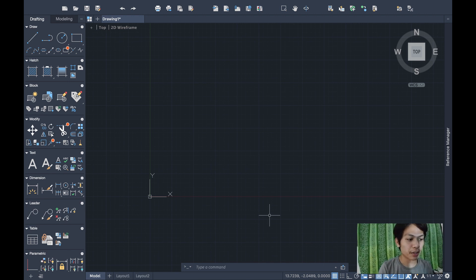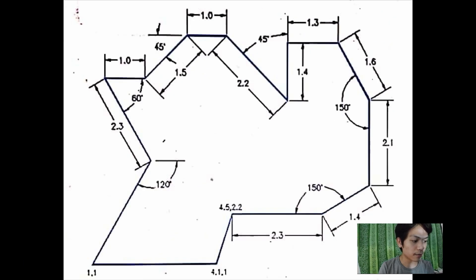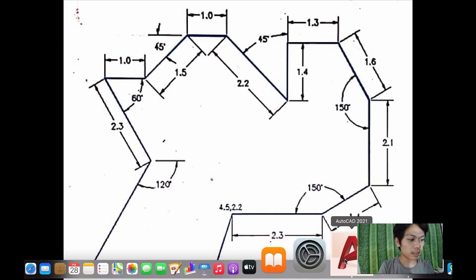Here we go. I'm going to show you my first activity — an irregular shape. A regular shape has different lengths and angles, so let's proceed.